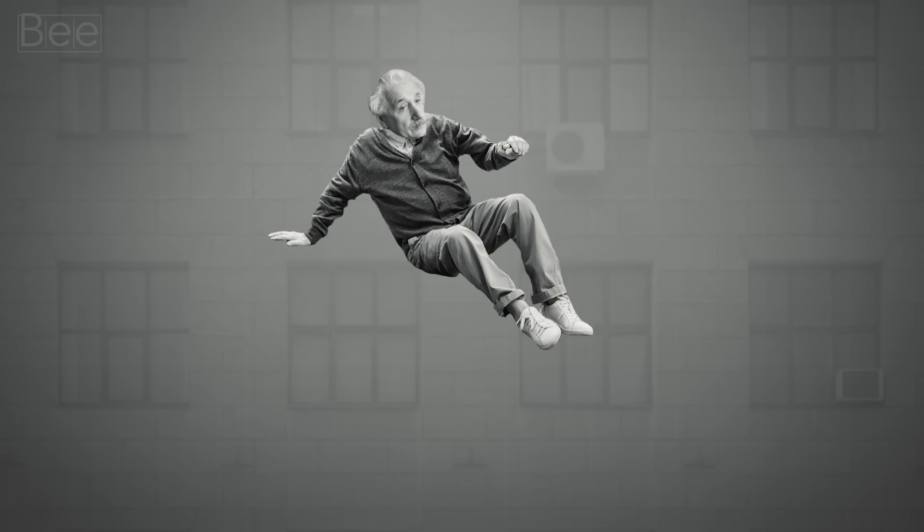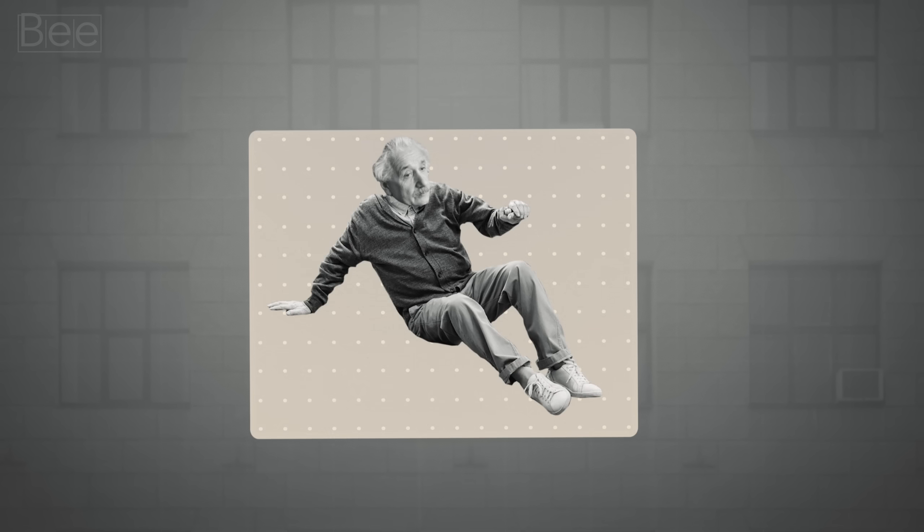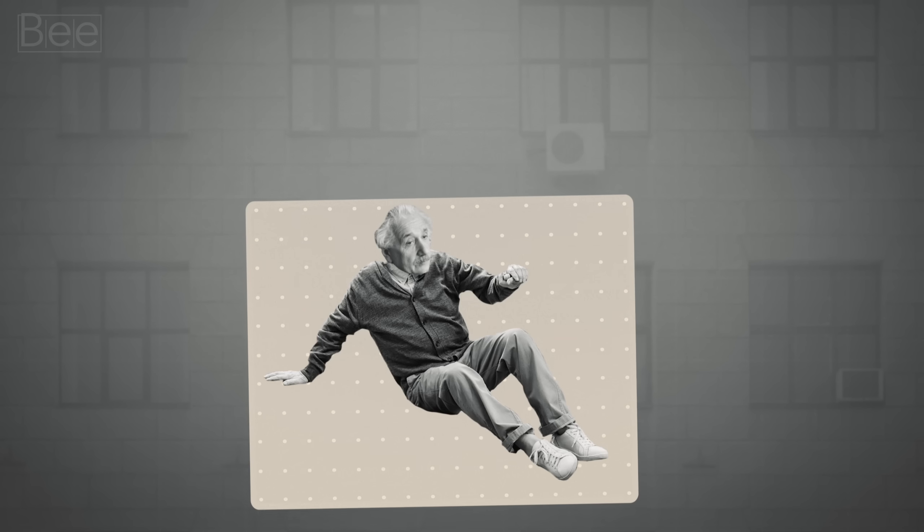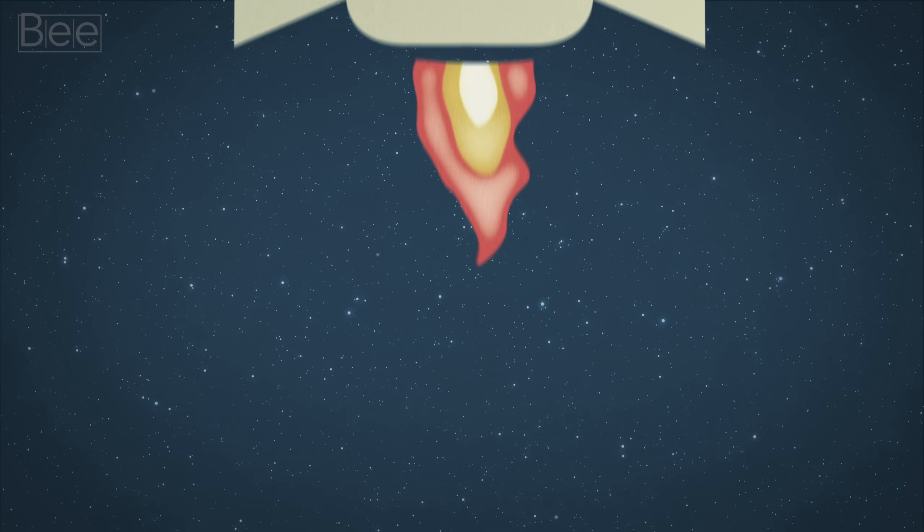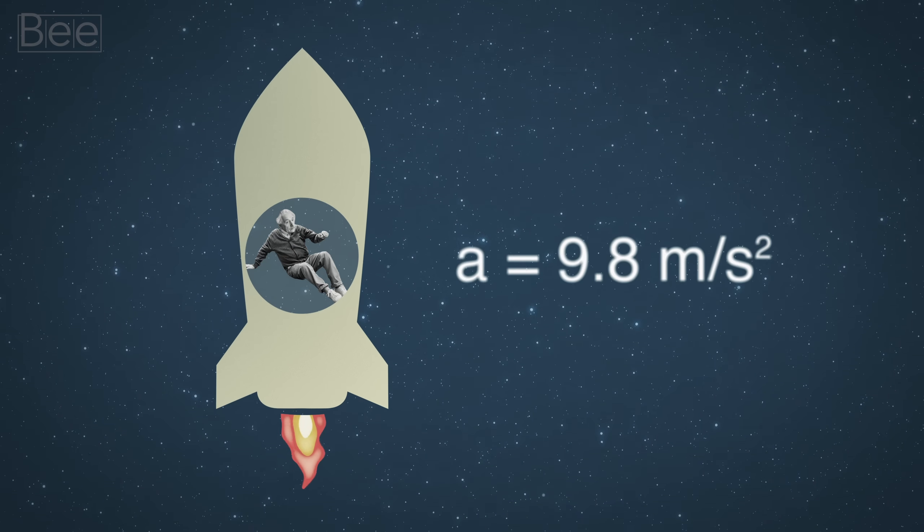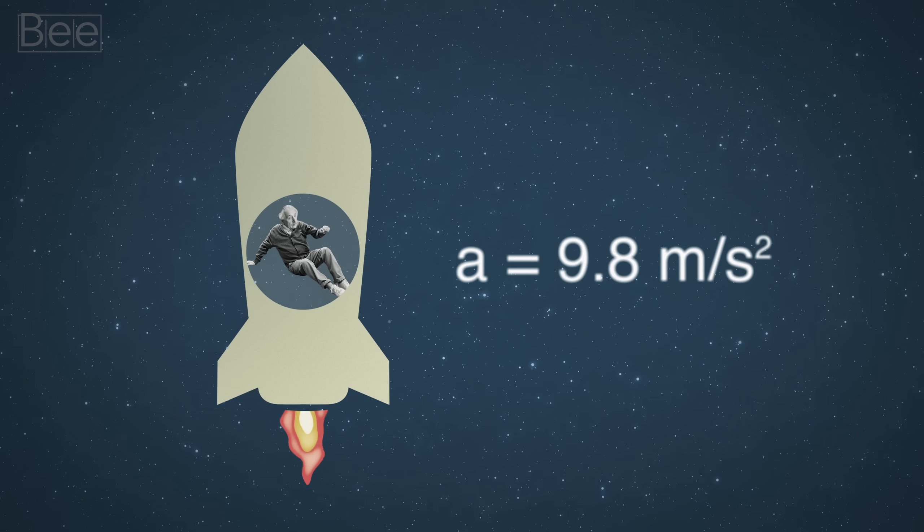He began to think about falling again. This time, he imagined himself in a room with no windows. On the surface of the Earth, you would weigh whatever your weight is now. But imagine if the room was in a spacecraft, moving in an upward direction with the same 9.8 meters per second squared as here on the ground. In that moment, if you were to weigh yourself, you would weigh the same as you do on Earth.